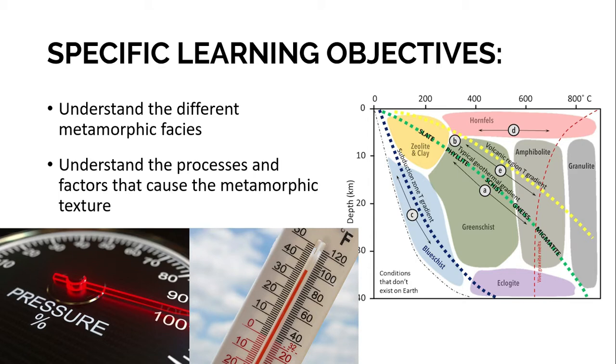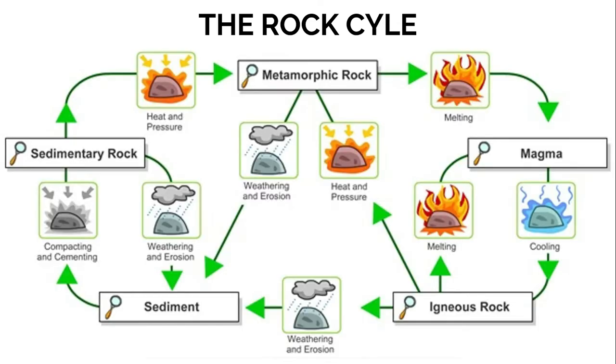When we say facies, it's the character of a rock expressed by its formation, composition, and fossil content. Recall that there are three basic types of rocks: igneous, metamorphic, and sedimentary, and we can use the rock cycle to describe their relationship. Now let's focus on metamorphic rock.